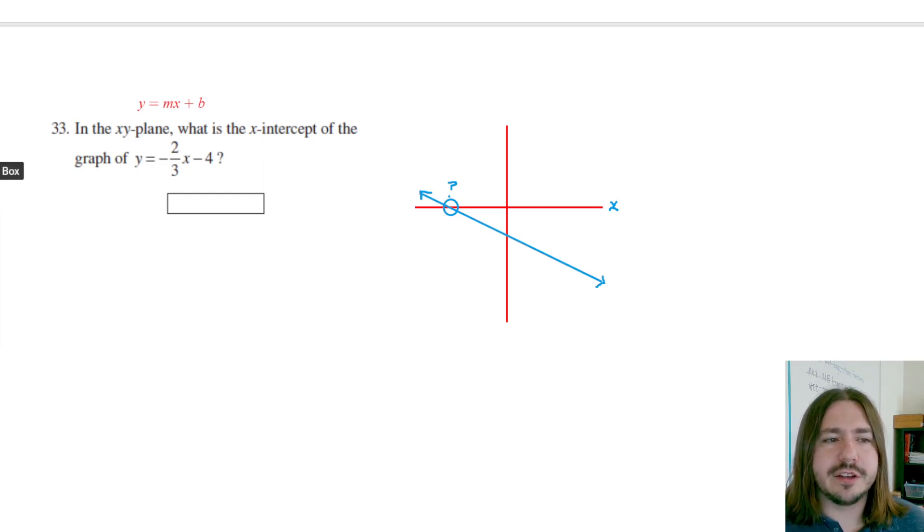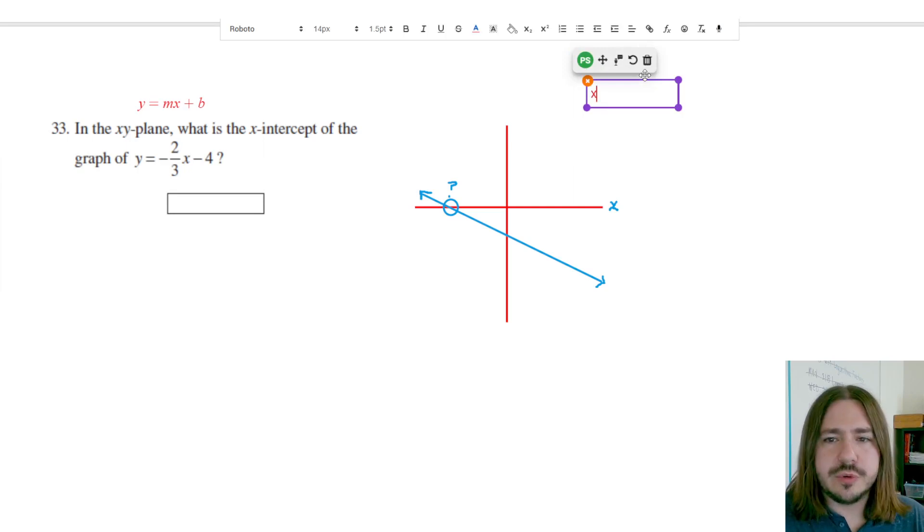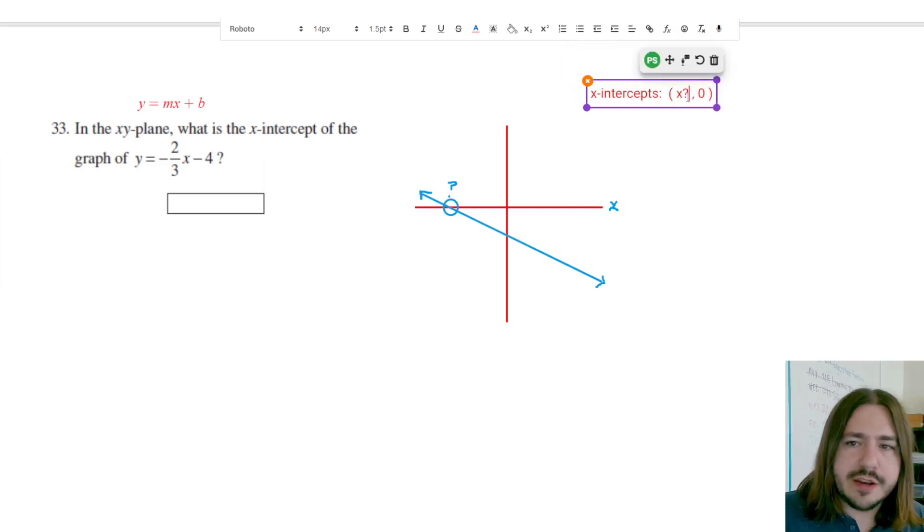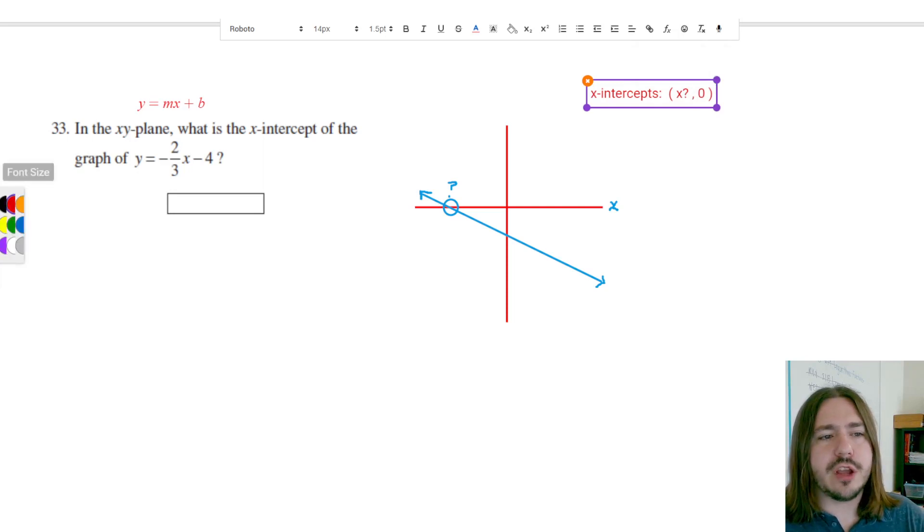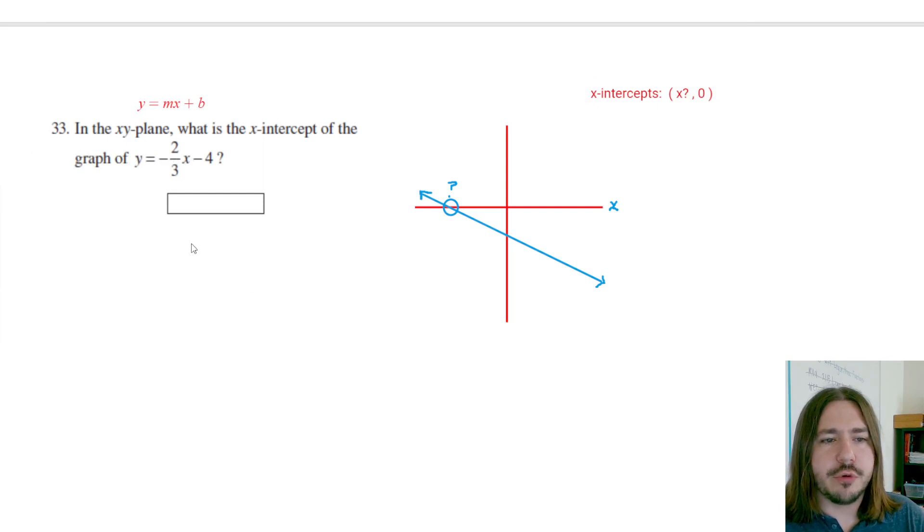All your x-intercepts are going to take the form, whatever the x is, comma zero. So we don't know what this is yet, we're going to find it, but we know that for whatever that x-intercept is, the y-coordinate is zero. So the way to go about doing this is going to be to substitute in zero for y, and then solve for x. So let's just go through the algebra there.